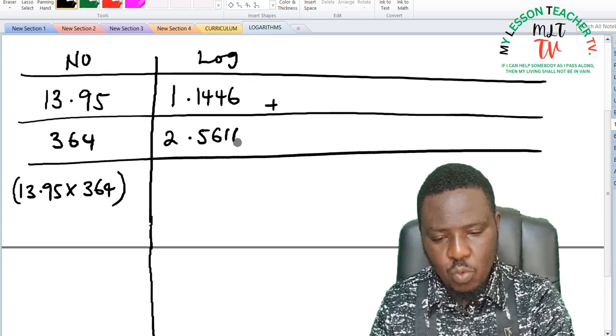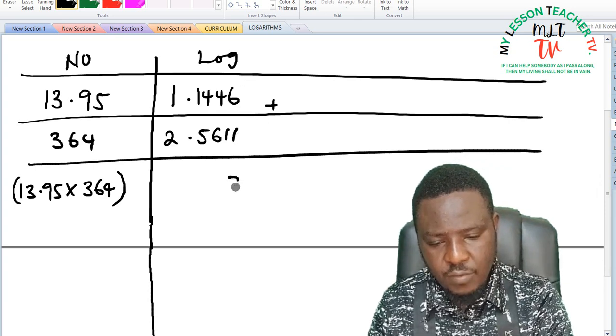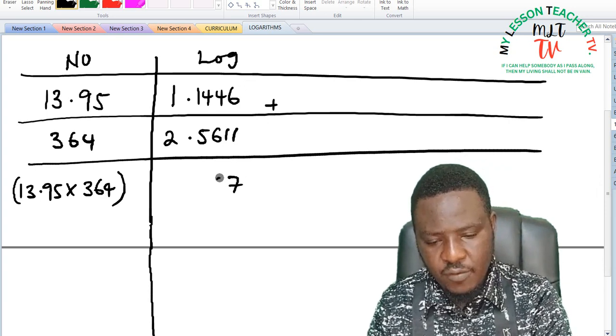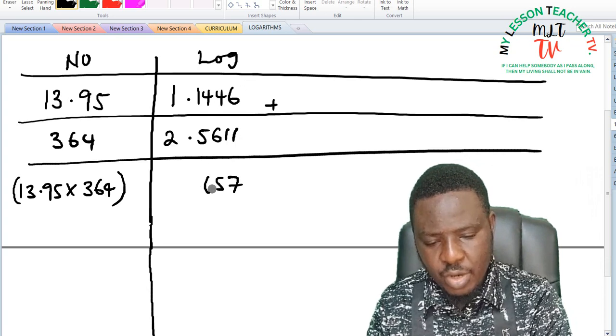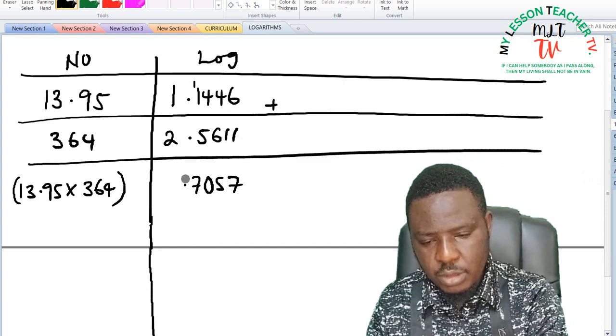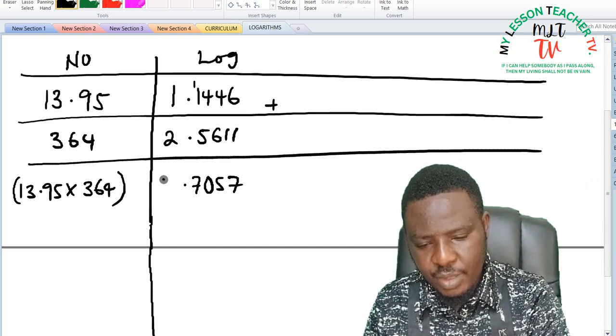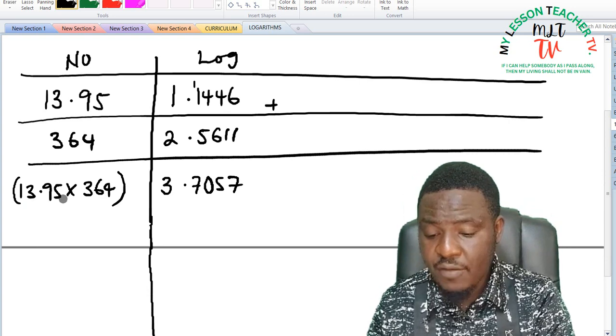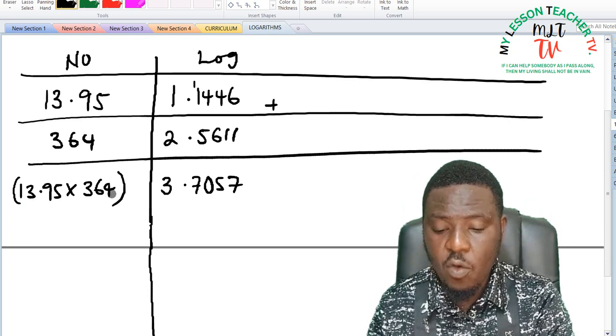In logarithm I said we are going to add. So I am going to add 6 plus 1 is 7, this is 5, this is 10 you write down 0 and carry 1, this is 7, this is 3.